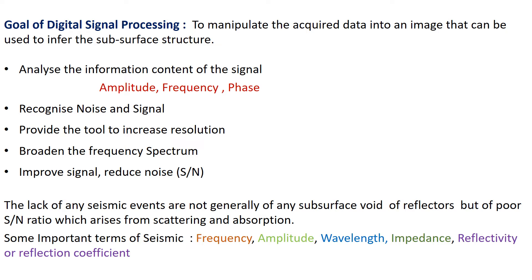The goal of digital seismic processing is to convert acquired data into an image from which we can infer subsurface structure. To do that, we need to know signal properties: amplitude, frequency, wavelength, and phase. We need to improve the signal-to-noise ratio and increase resolution by broadening the frequency spectrum. Poor S/N ratio can arise from scattering and absorption, which resist seismic processing.